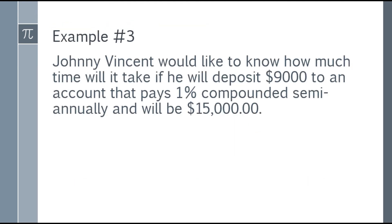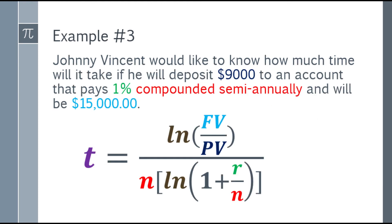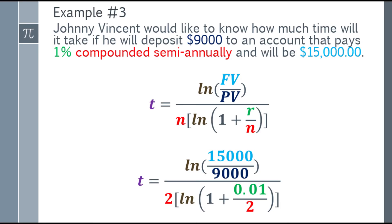Example number 3: Johnny Vincent would like to know how much time will it take if he will deposit $9,000 to an account that pays 1% compounded semi-annually and will be $15,000. Same question again. We're looking for how long he has to wait for his $9,000 to become $15,000 in a bank paying 1% compounded semi-annually. First step, place the formula right away. Second step, substitute the values.